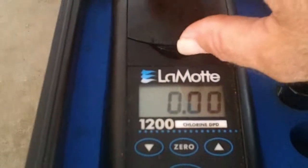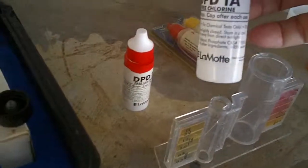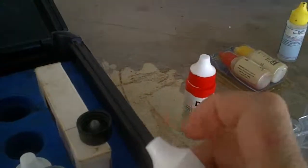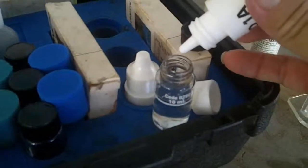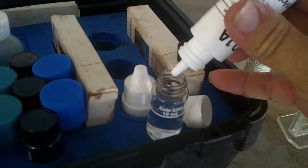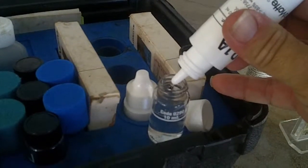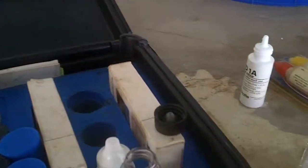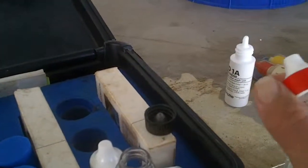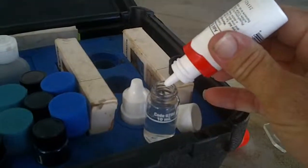Okay, now it's ready for the reagents. This is a two-part deal. You've got 1A and 1B. The 1A is clear, and it goes in and stays clear. Put five drops. And 1B is pink stuff, and it makes it turn pink.